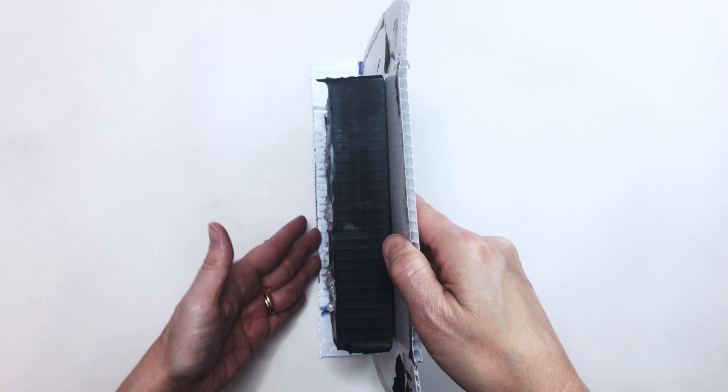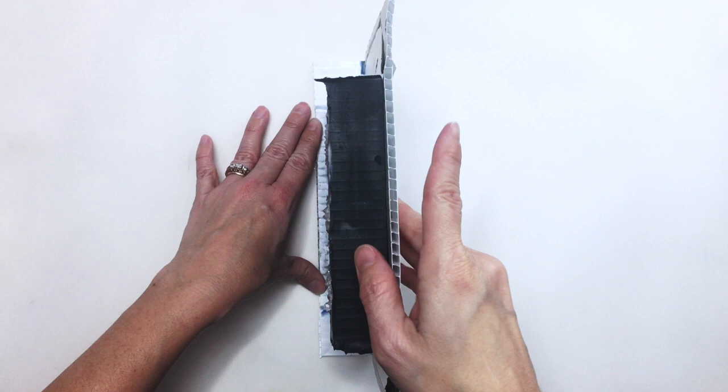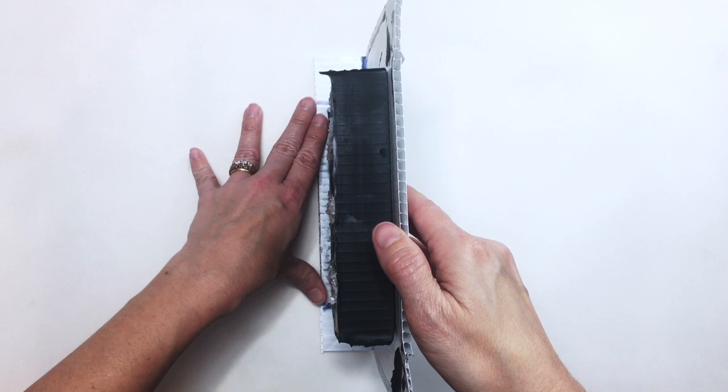The soap sticking was my first clue, and then of course it left fingerprints and it didn't really want to come out of the mold. That's a sure sign that your soap isn't ready.